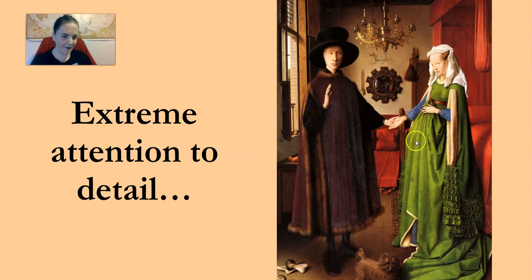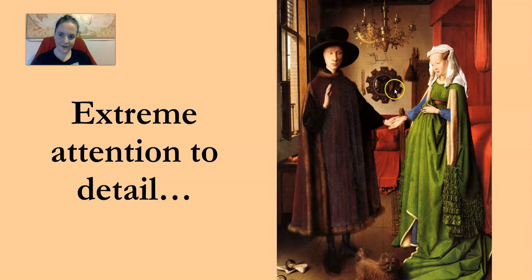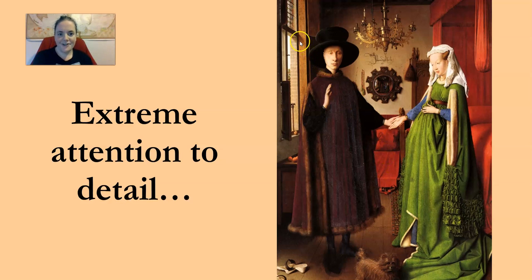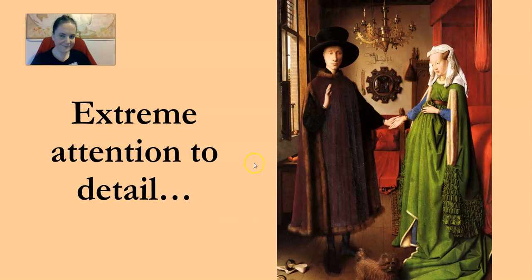Let's take a look at the background of the Arnolfini portrait. You can see behind the bride and the groom there's a mirror, and you can see them as two figures there. You can also see the individual lattice work and cutouts on the chandelier. All of the fabric in the background has folds. The shadows from the window come in at a certain angle. You can even see the eyelets in the bride's lace.